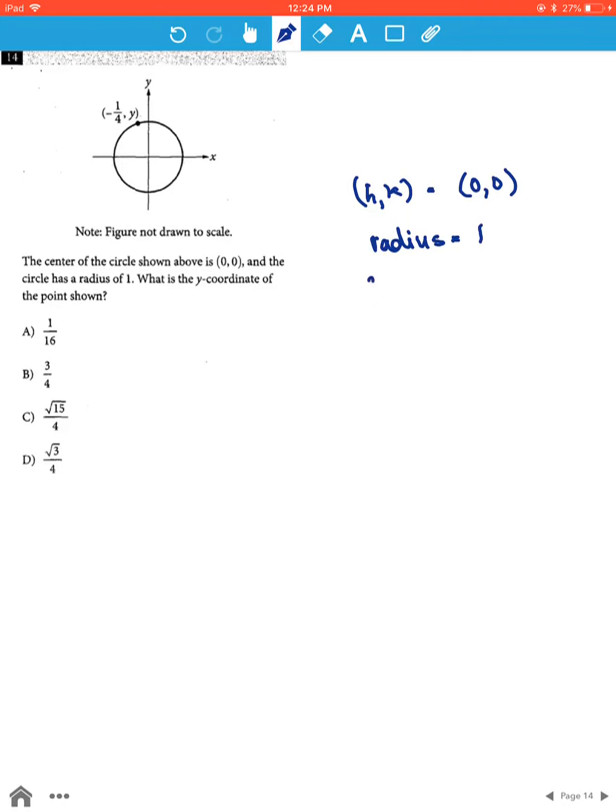And one point on the circumference of the circle, that's x, y, is negative 1 over 4, y.